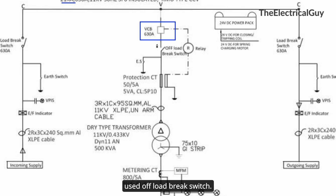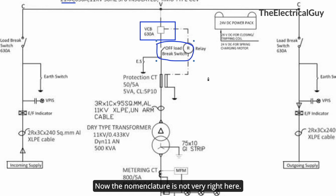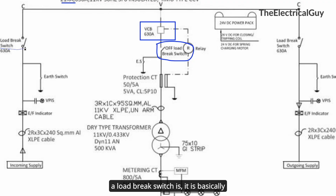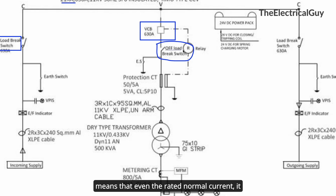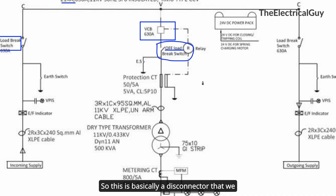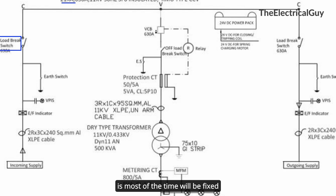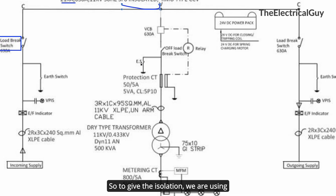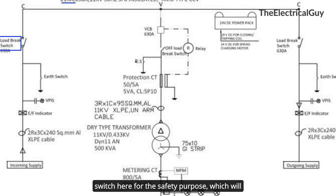In series with the circuit breaker we have an off-load switch. The nomenclature here is not quite right — an off-load switch means it cannot even break the rated normal current, so the correct term would be a disconnector. This disconnector is used in series with the breaker for isolation purposes, since the breaker is mostly fixed inside the SF6 tank of this SF6-insulated RMU. We also have an earth switch here for safety, to ground the trapped charges.